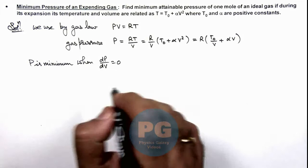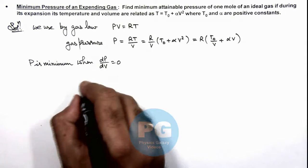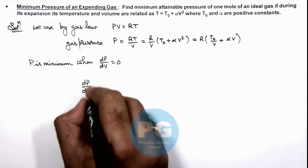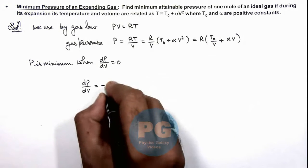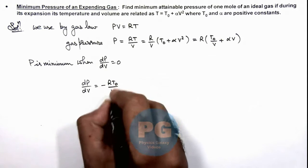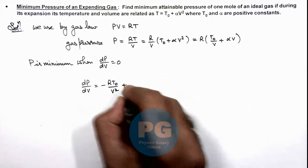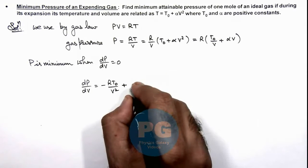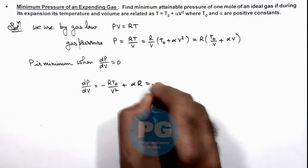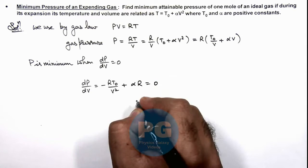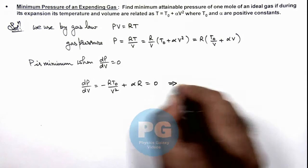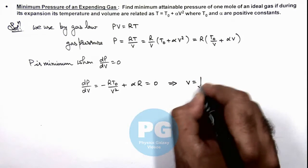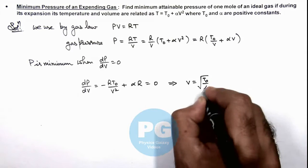If we differentiate it, dP/dV is given as -RT₀/V² + αR, and this should be equal to zero. In this situation we can see R gets cancelled out and it gives us the value V = √(T₀/α).